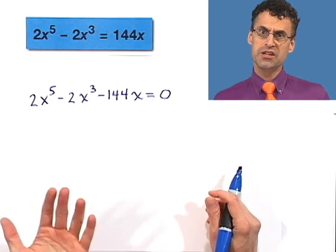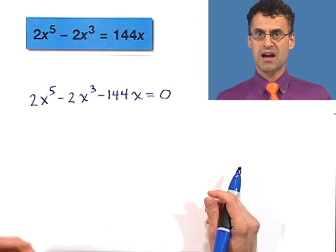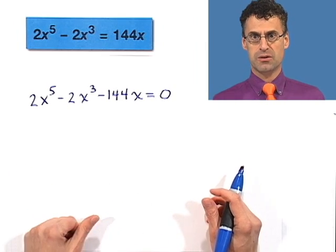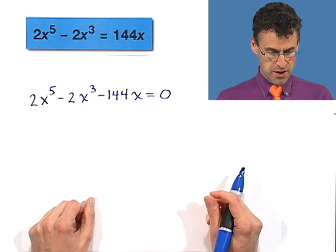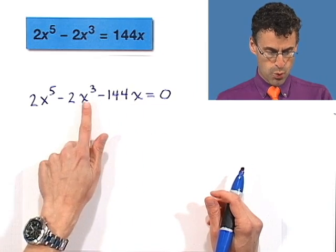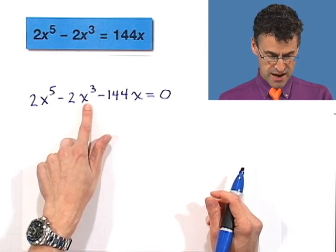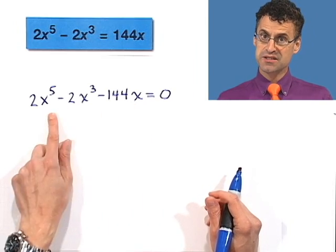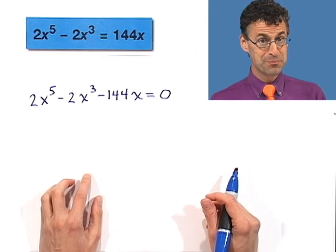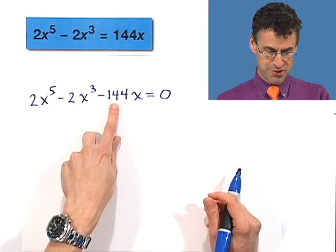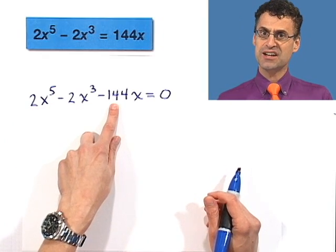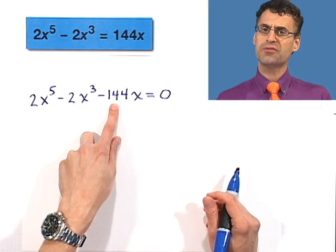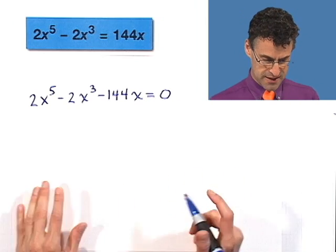Now we want to factor this. Factoring means pull out things that are in common, greatest common factors. I look at this and notice there's a common factor of one x everywhere. There's an x here, an x here, and exactly one x here. I can factor out an x. But if you can be really sneaky, I notice that all the coefficients are even, which means I can actually factor out a two. So I'm going to factor out 2x to begin with.